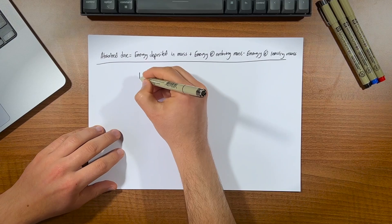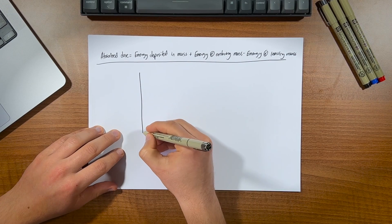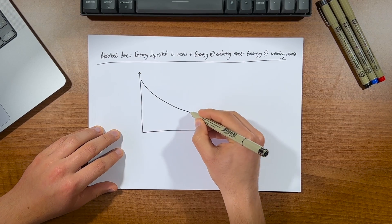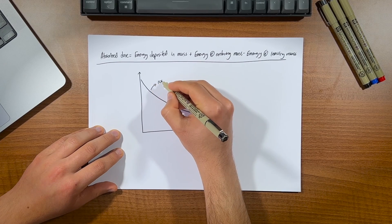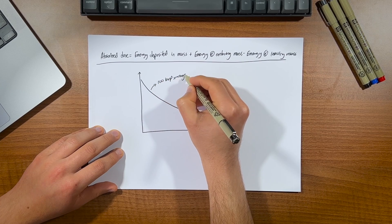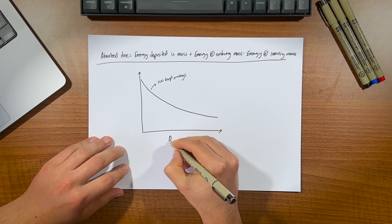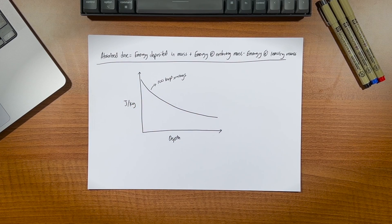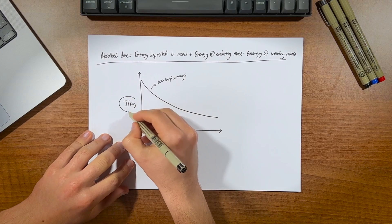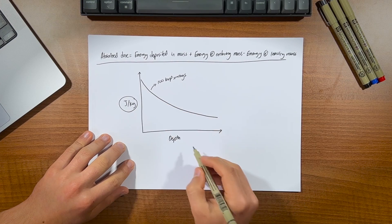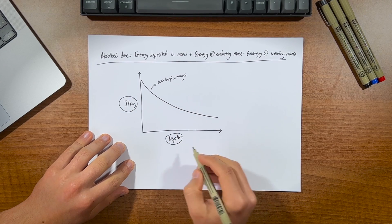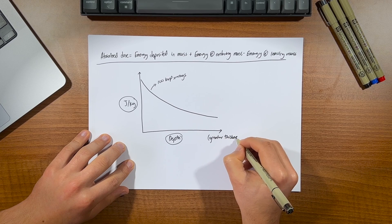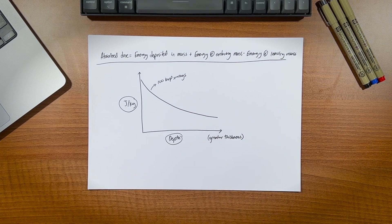Again, if the energy of the electrons that are released are high enough - that is, if sufficient energy was deposited onto them by the incoming photon - then the amount of energy absorbed along the depth axis of this material will look like this. Now this is what we call a depth dose curve, which as the name suggests is plotting the amount of energy absorbed in a material as a function of the depth, or let's say the thickness of the material. So as we move along the x-axis, this means that there's hypothetically more of that material, or that there's a greater thickness of it.